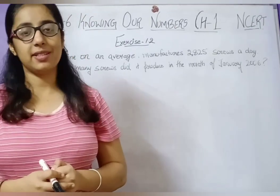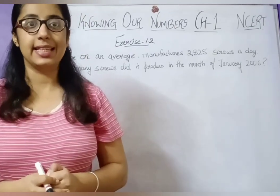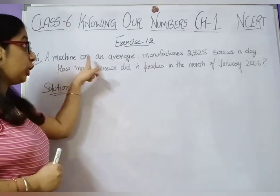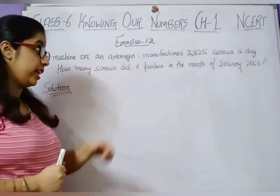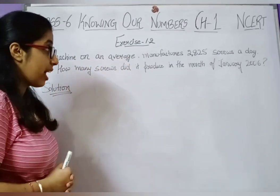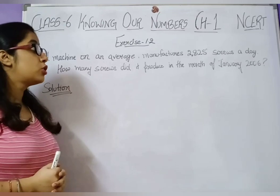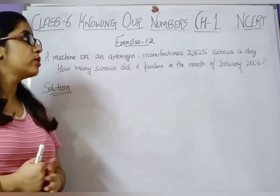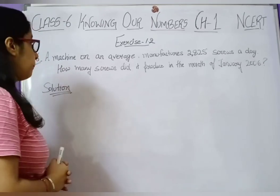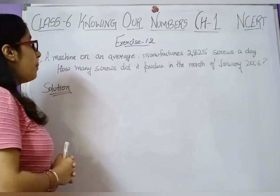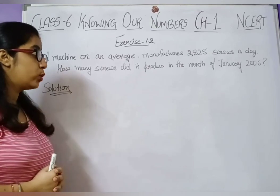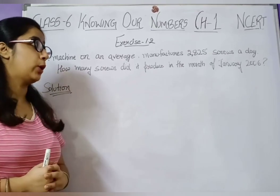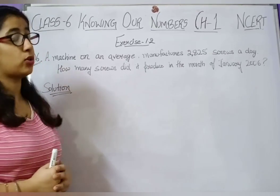Question number 6 says: a machine on an average manufactures 2,825 screws a day. How many screws did it produce in the month of January 2006?